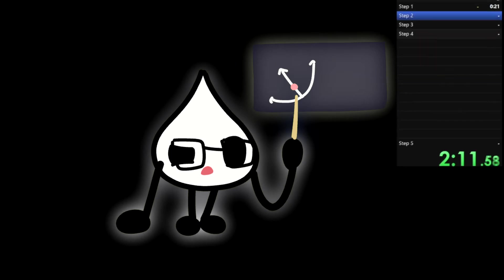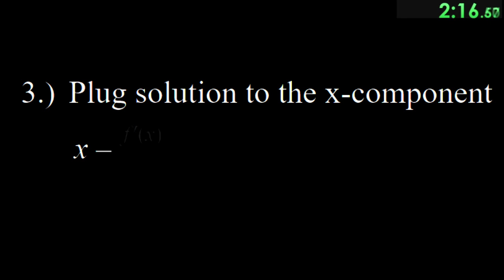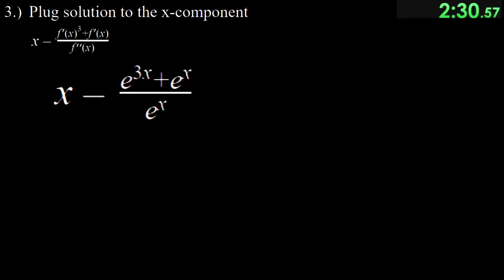To find that point, we have to do step 3 where the equation is x minus f prime cubed plus f prime over f prime prime. Doing the f's, we have x minus e to the 3x plus e to the x all over e to the x. Immediately, we can divide the fractions so they become e to the 2x plus 1. The minus applies to both terms so it's x minus e to the 2x minus 1.